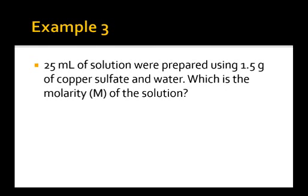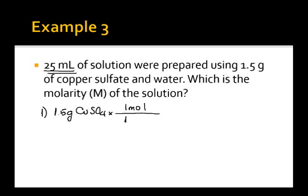In example number 3, we have 25 milliliters of a solution, which will be the volume. We need to calculate the number of moles of copper sulfate from 1.5 grams of copper sulfate pentahydrate. One mole is equivalent to approximately 150 grams, so the number of moles is 0.01 moles of copper sulfate.